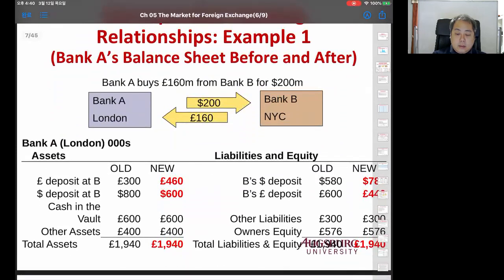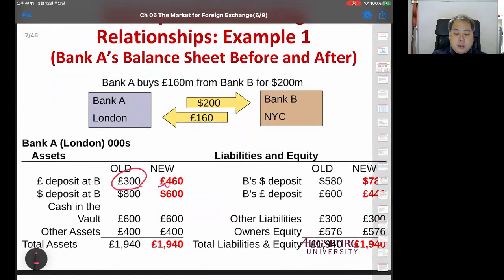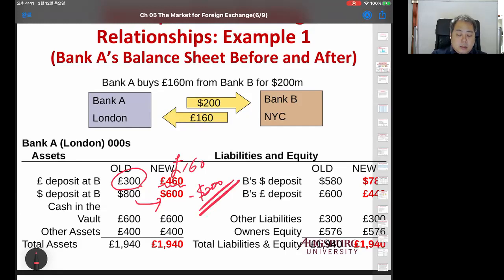On Bank A's balance sheet: the pound deposit at B increases from 300 to 460 pounds, because 160 pounds are deposited. And because Bank A paid $200 US dollars, dollar assets decrease by $200. So you have the same net asset value - you paid the same dollars that bought 160 pounds. In London, this is recorded as pounds.